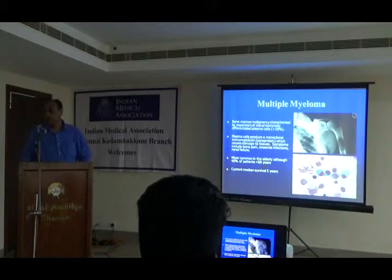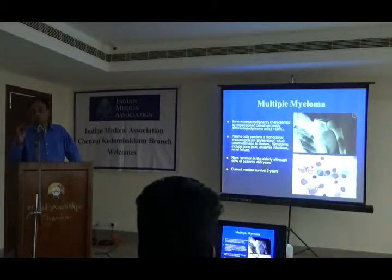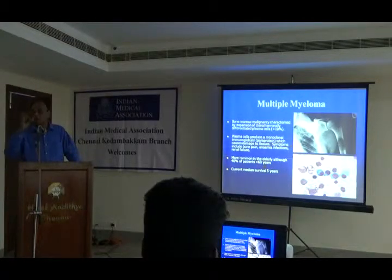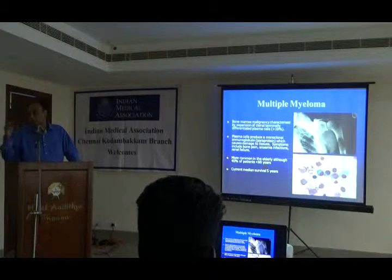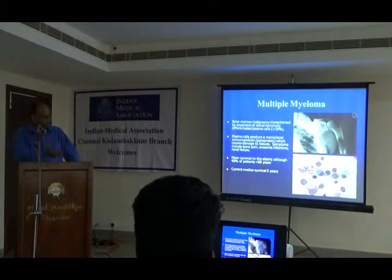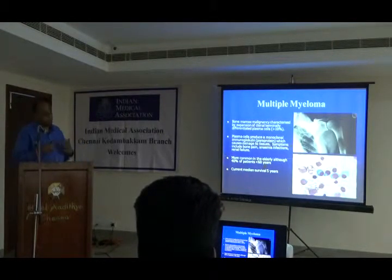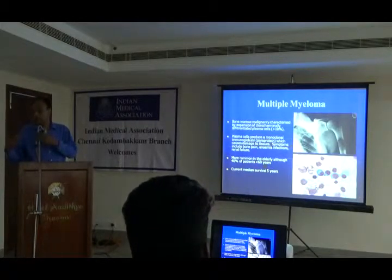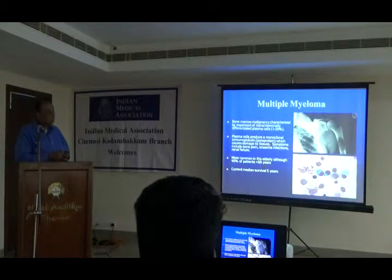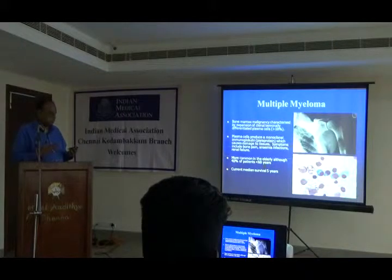Multiple myeloma is a bone marrow cancer involving malignant plasma cells that produce excess immunoglobulin, causing anemia, bone pain, pathological fractures, lytic lesions, and adrenal failure. The classic CRAB symptoms are hypercalcemia, renal failure, anemia, and bone pain. An M protein is produced causing bone marrow destruction. On bone marrow biopsy, plasma cells are visible with centrally placed nuclei and basophilic cytoplasm containing immunoglobulin-producing dots. Diagnosis is supported by reversed albumin-globulin ratio and M protein on protein electrophoresis.